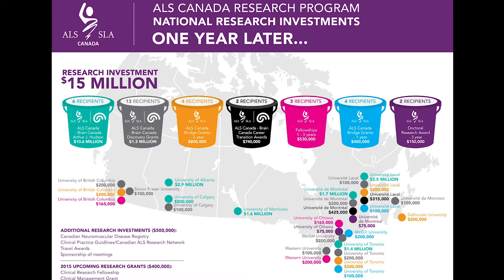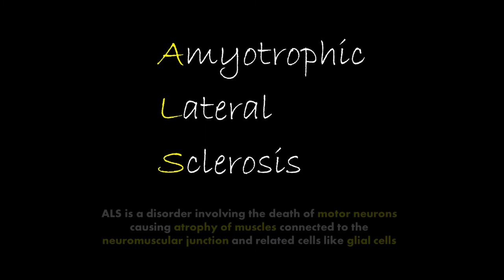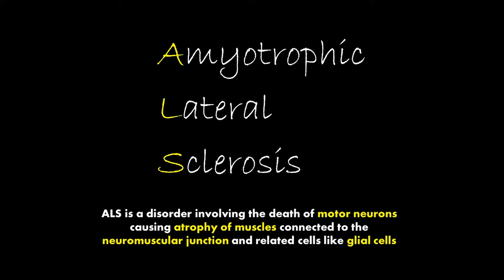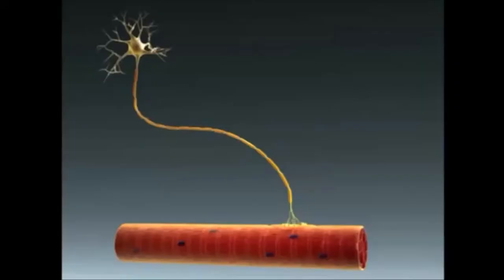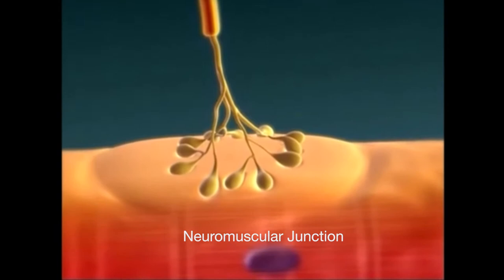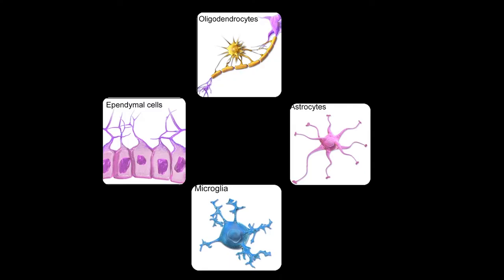ALS, amyotrophic lateral sclerosis, is a disorder involving death of motor neurons causing atrophy of muscles connected to the neuromuscular junction and related cells like glial cells. The brain is made up of numerous circuits of cells called neurons. A junction where a neuron connects another neuron is called a synapse, through which many signals or messages are conveyed to the brain. One such synapse — of a motor neuron connecting muscles — is called the neuromuscular junction, used for sending and receiving motor signals to and from the brain.